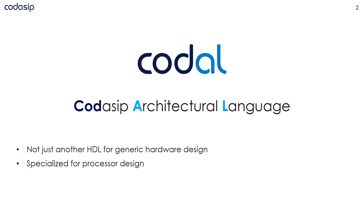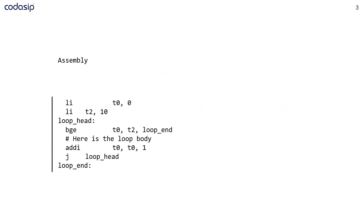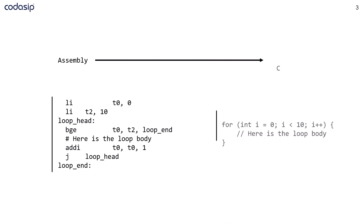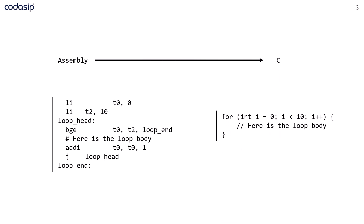To explain how that is different, let me use a parallel from the software world. In the past, most of the software was implemented in assembly. Once more abstract languages, such as C, were introduced, it brought efficiency into development by introducing high-level constructs such as the for loop on this slide. As you can see, the equivalent code in C is simpler and easier to read.